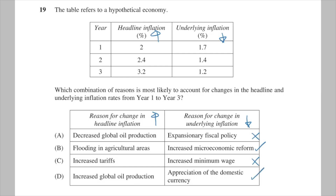Now let's look at the left-hand side for volatile items that have caused one-off increases in prices. Decreased oil production could cause higher oil prices — this could be right. Flooding would cause one-off increases in fruit prices — this could also be right. Increasing tariffs could cause a one-off increase in imports — so this could also be right. Increased oil production would cause lower oil prices, so that one is wrong. The only correct combo here is B.